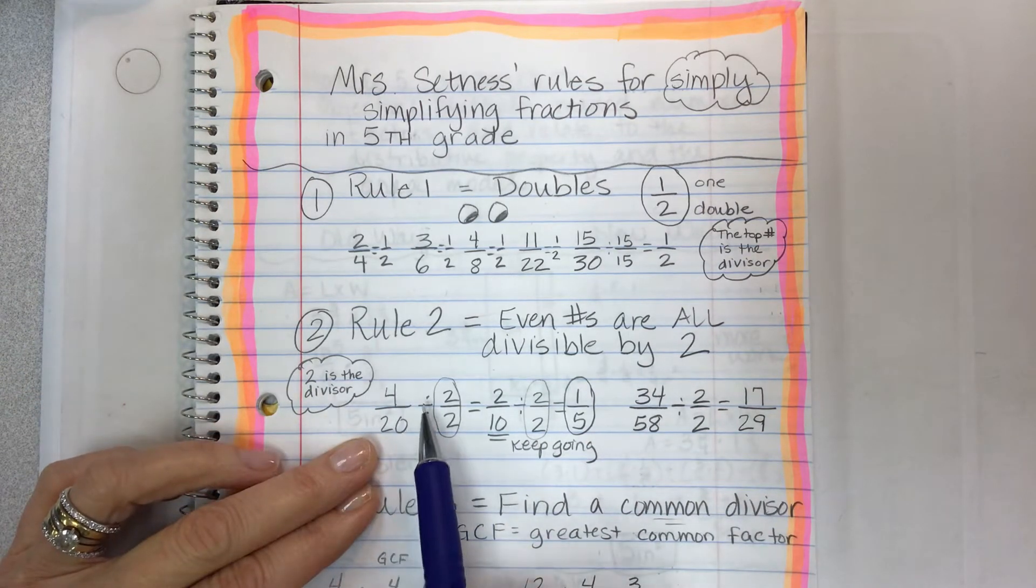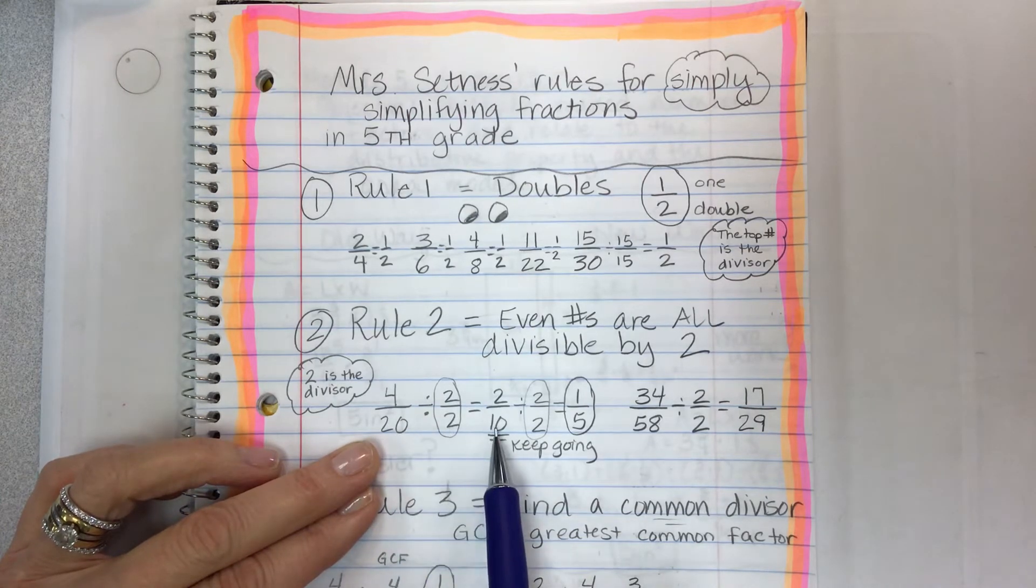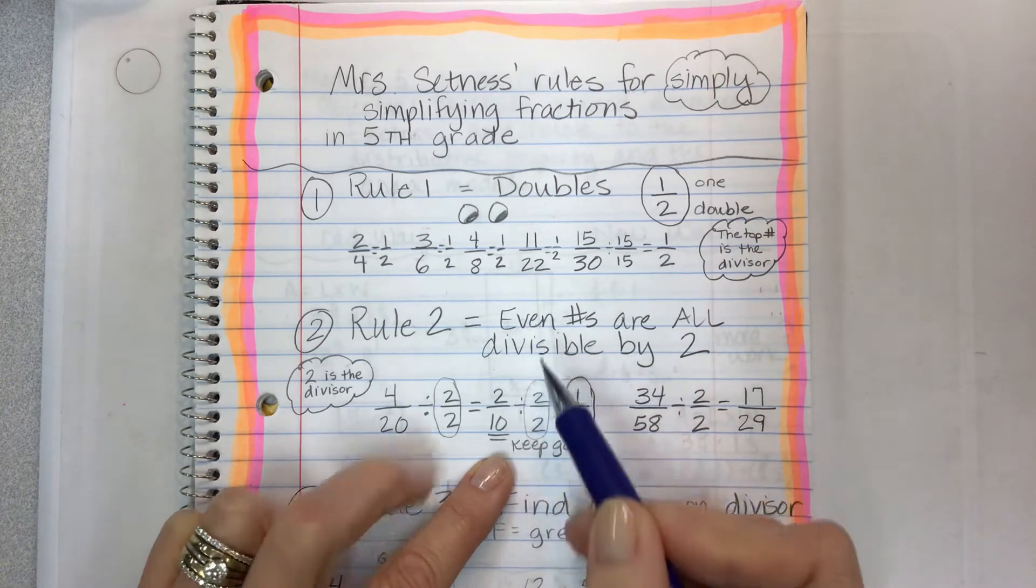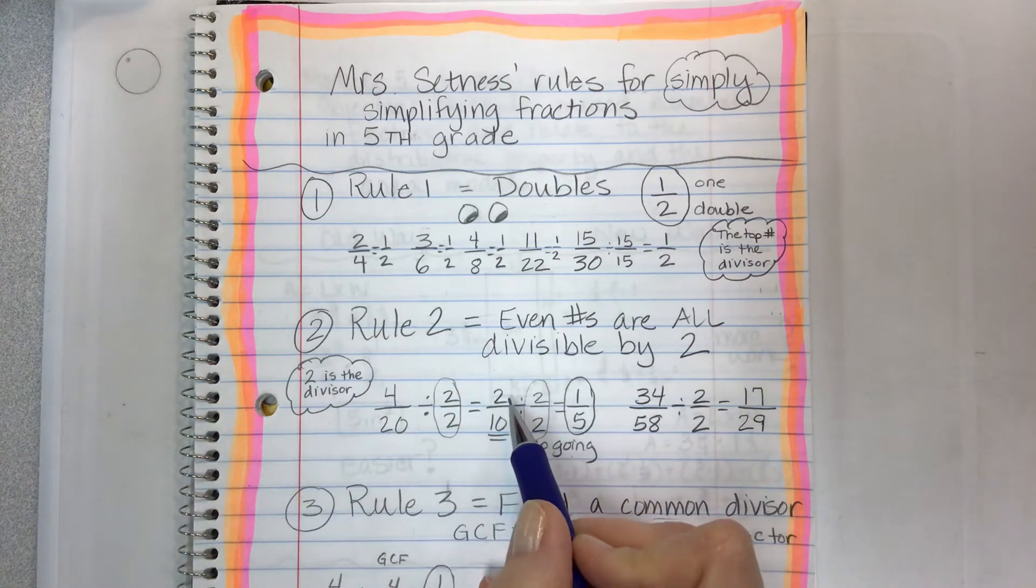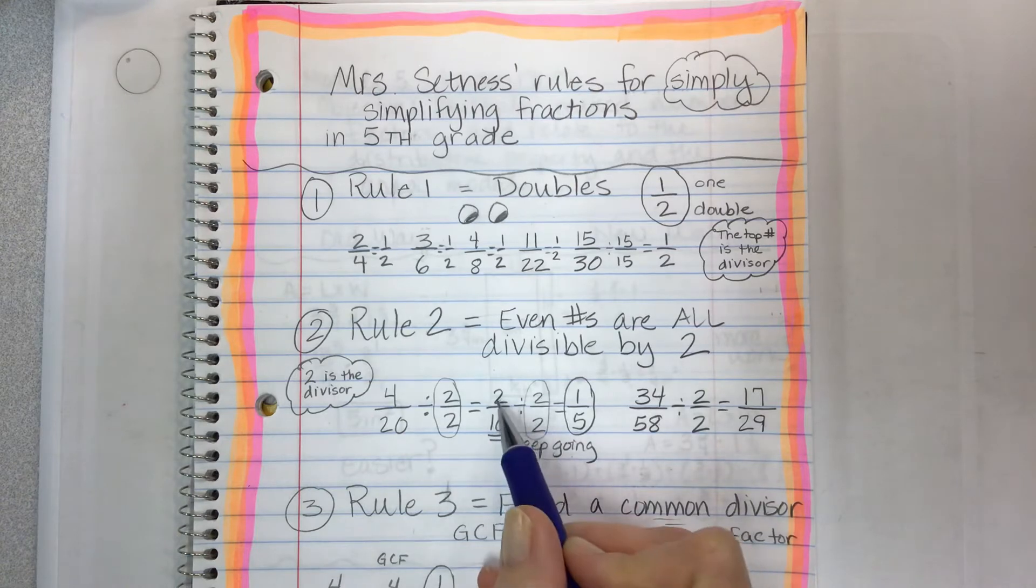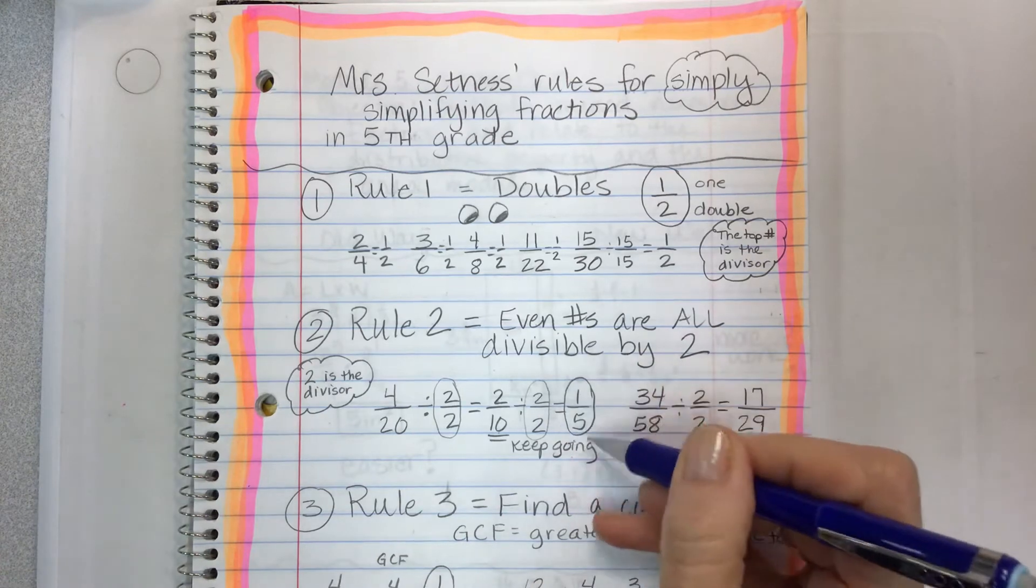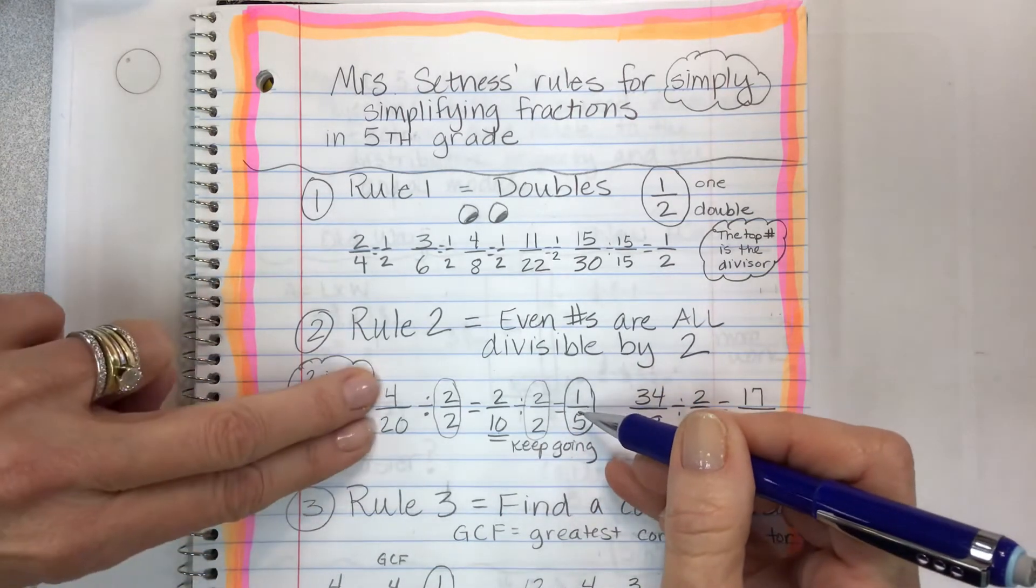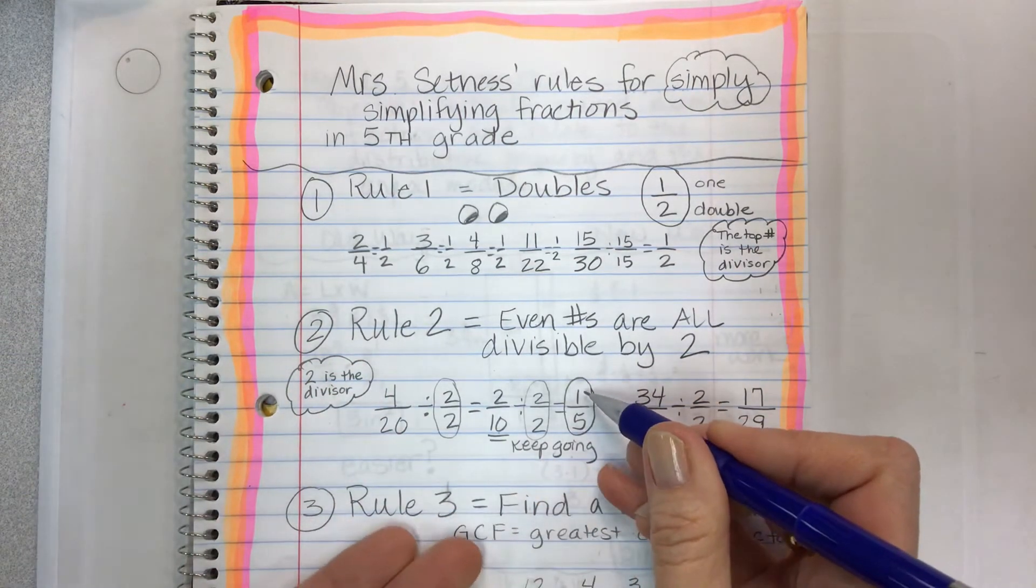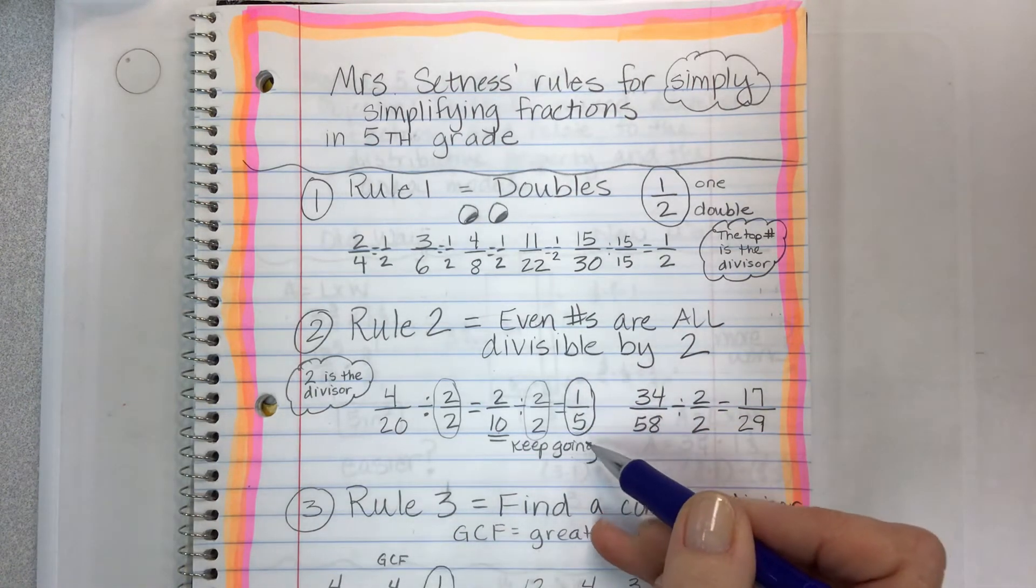Let's start with 4 20ths. If I divide four by two, I get two. If I divide 20 by two, I get 10. Now this is a situation where two and ten are still even, so you can keep going. If you take this two and divide by two and take the ten and divide by two, two divided by two is one and ten divided by two is five. This is the simplest form of what we started with. Typically it'll have like a one on the top or they'll be like one digit apart and that's how you can tell that's a good place to stop.